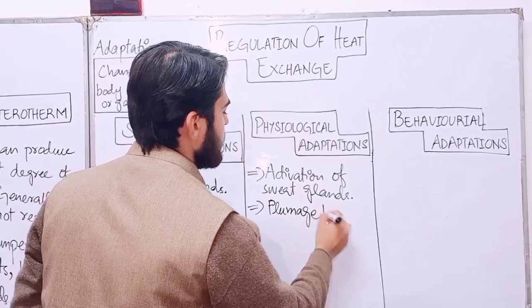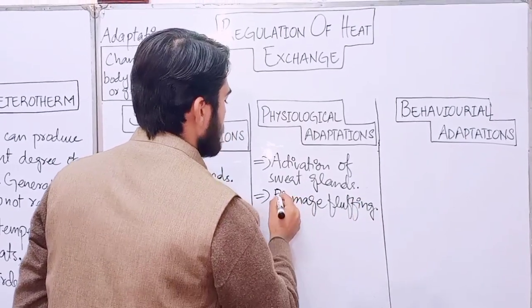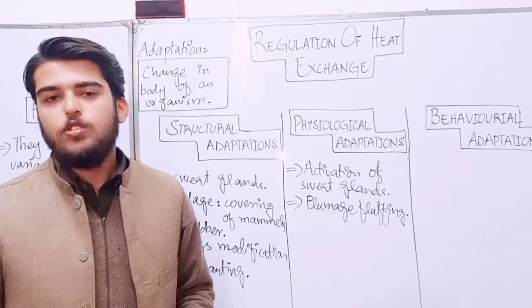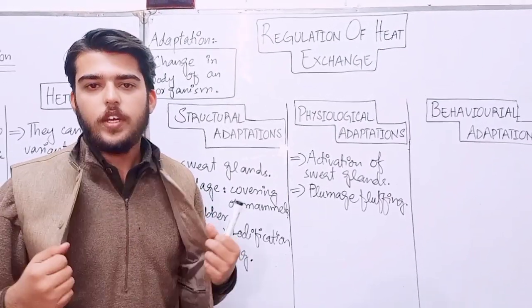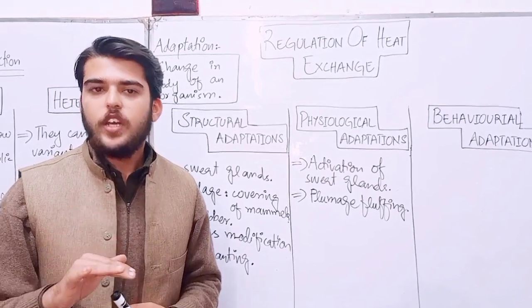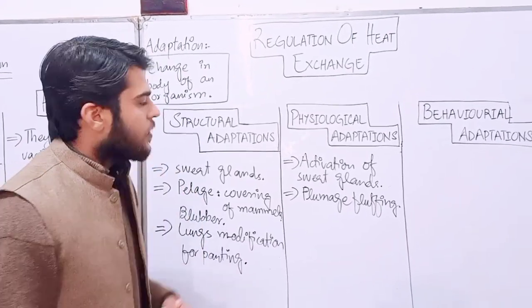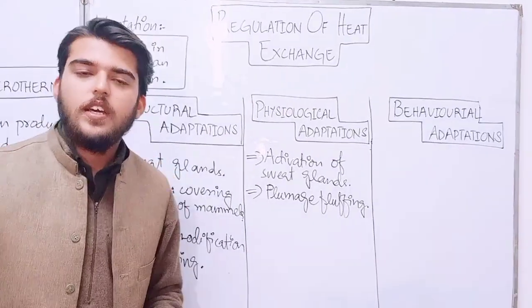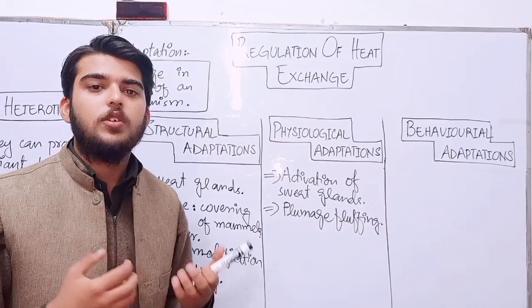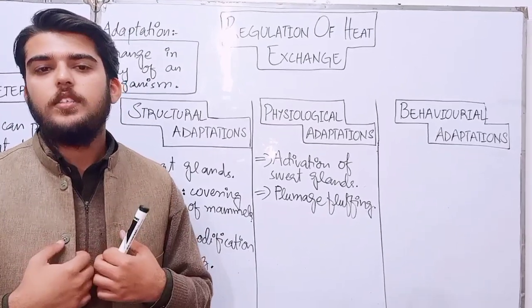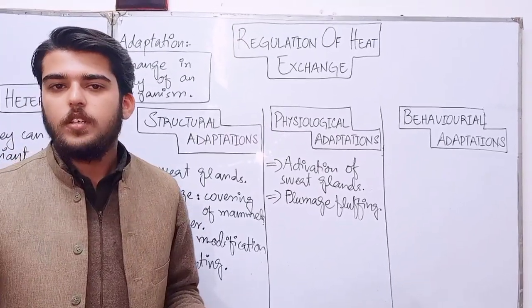Another physiological adaptation is plumage fluffing. For example, if it is a very cold season and a person leaves their coat open, their body temperature will keep dropping and they could freeze and die. Similarly, in birds, they fluff their bodies by activation of muscles, which causes them to retain body heat inside, regulating their body temperature. This is very useful in harsh winter seasons.